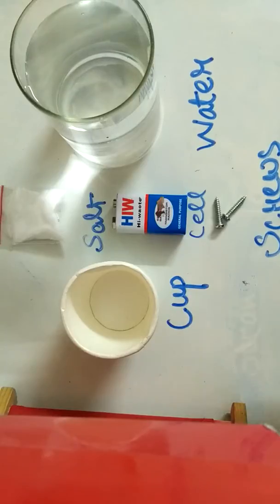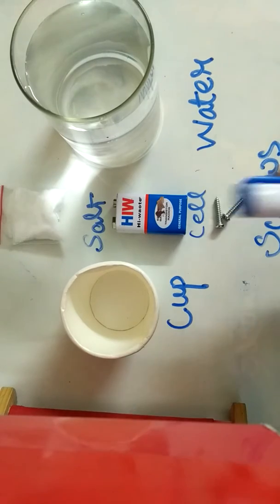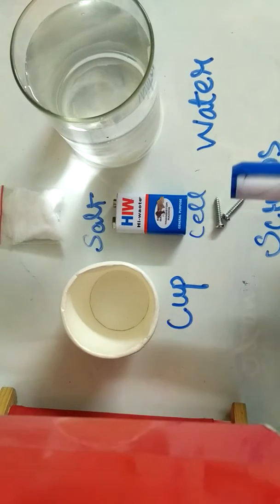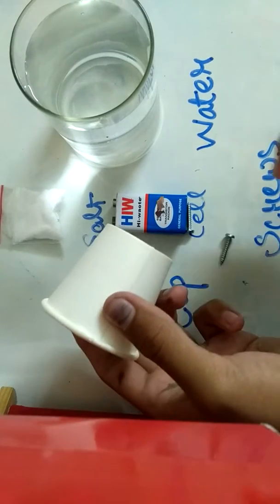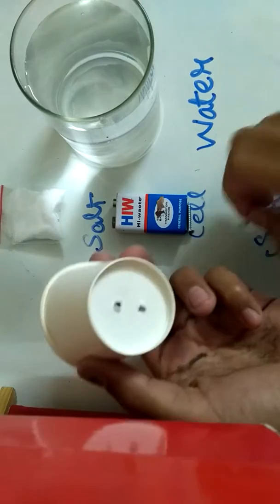We're going to perform a very interesting activity which is the electrolysis of water. This is also known as the chemical effects of electric current. For this we need a few things like a cup, a small sample of salt, a 9-volt battery, two screws, and a glass of water.